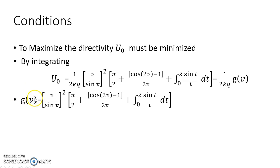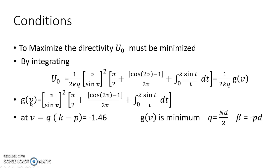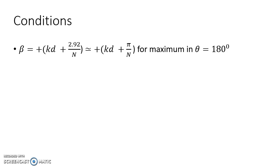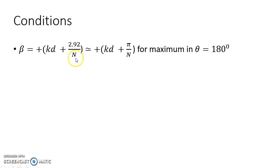The minimum value of g(v) is found by evaluating different values of v; experimentally, the minimum occurs at v = −1.46. Back-substituting q = nd/2 and beta = −pd into the equation for v, we define a new value of beta equal to −kd + 2.92/n, where 2.92 is approximately π. This is the equation for beta for maximum along 0 degrees. Similarly, for θ = 180 degrees, beta is the positive version of this equation.